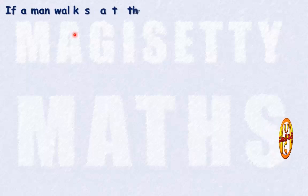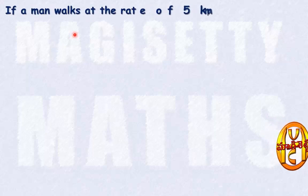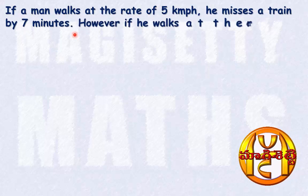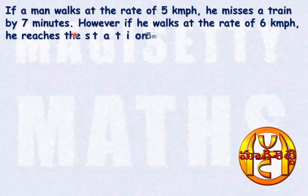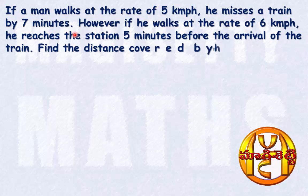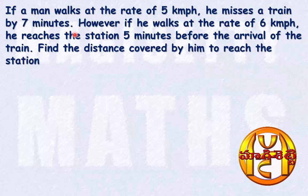Here, the problem is: if a man walks at the rate of 5 kmph, he misses a train by 7 minutes. However, if he walks at the rate of 6 kmph, he reaches the station 5 minutes before the arrival of the train. Find the distance covered by him to reach the station.